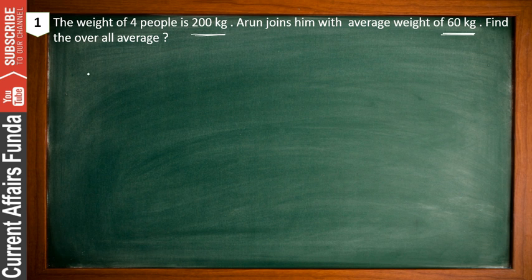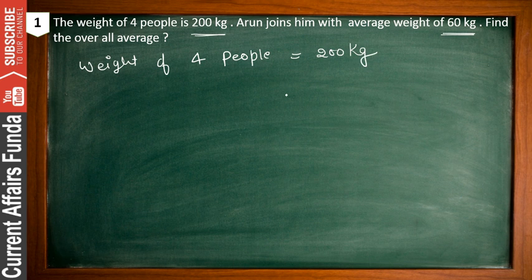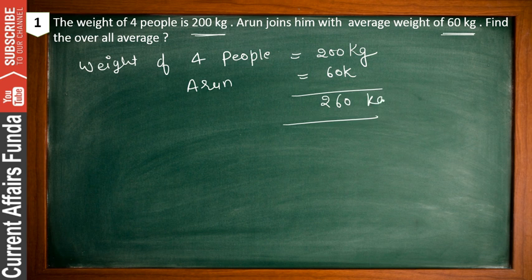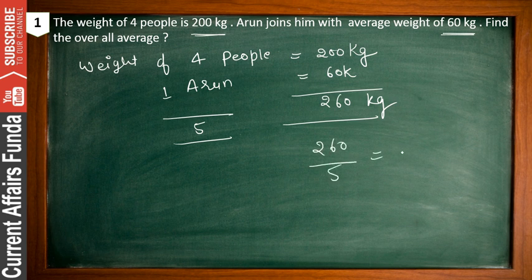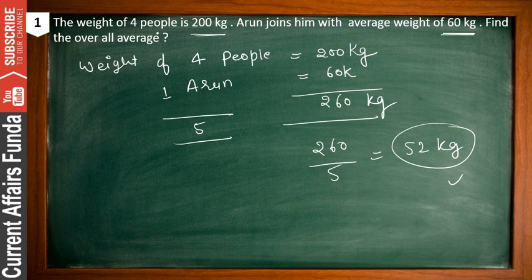To solve this: the total weight of four people is 200 kg. Arun joins with 60 kg, so the new total weight becomes 260 kg. There are now five people — four plus one. So divide 260 by 5, which gives 52 kg. That is the average weight of the five persons. Arun ke aane ke baad 200 plus 60 equal to 260, divided by 5 equals 52 kg.